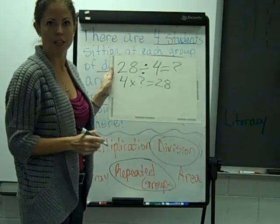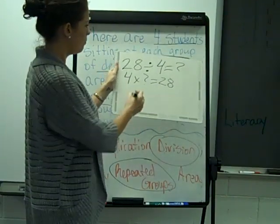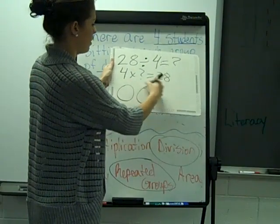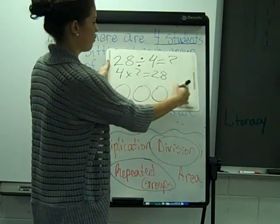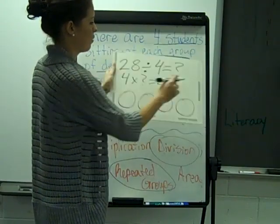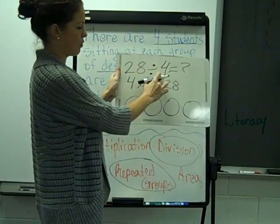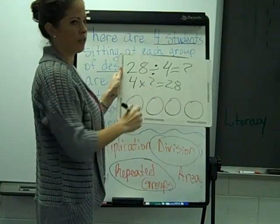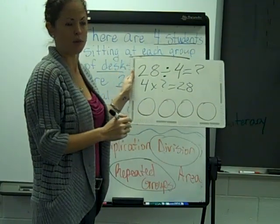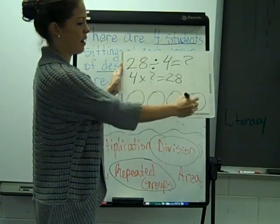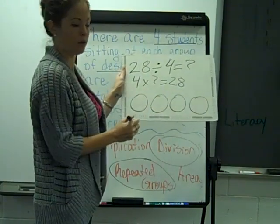You could also draw a picture. Here are four groups for the four students at each group. Now we're going to figure out how many groups there are by dividing the 28 out among the four groups.